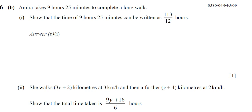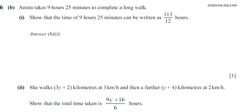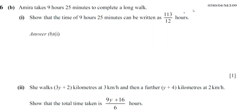Amira takes 9 hours and 25 minutes to complete a long walk. We are told to show that the time of 9 hours and 25 minutes can be written as 113 over 12 hours.